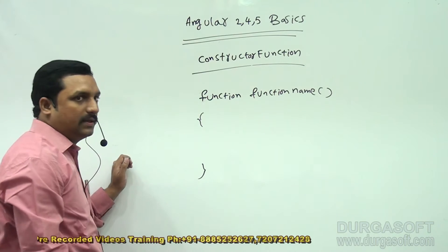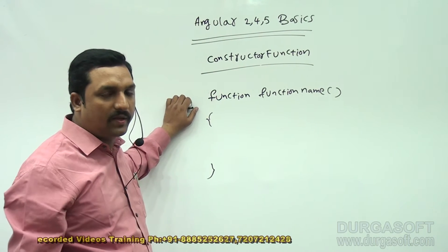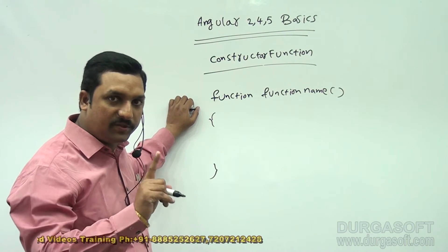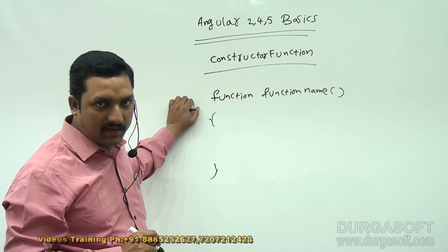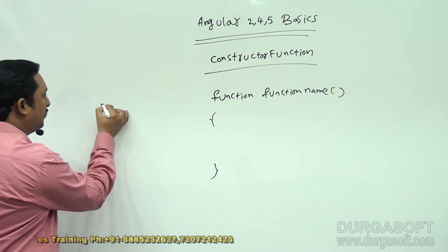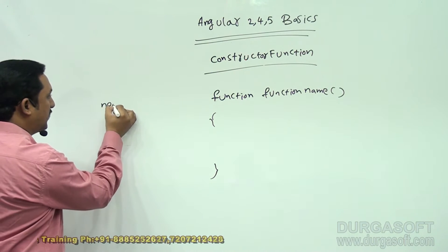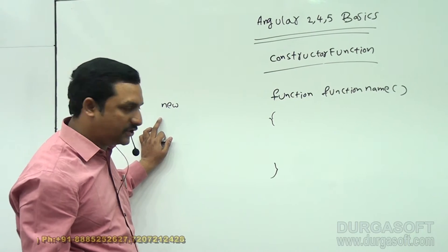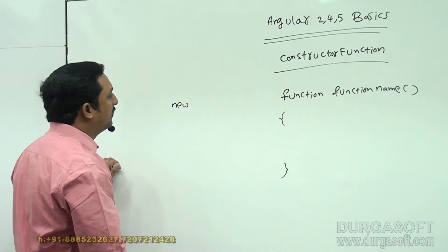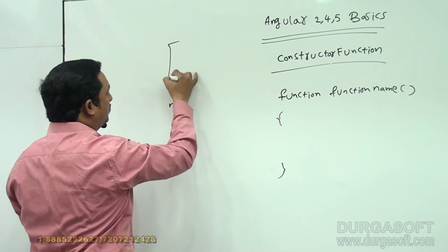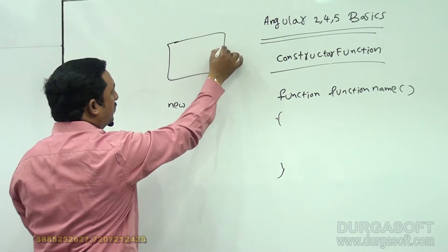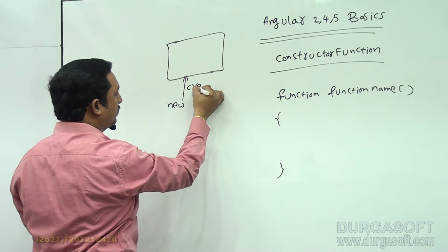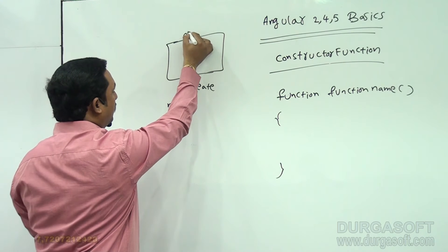In this constructor function we are able to initialize properties and methods. First of all, an object is required. The new keyword will create an object. So we have an object — the new keyword creates it, and the object is ready.